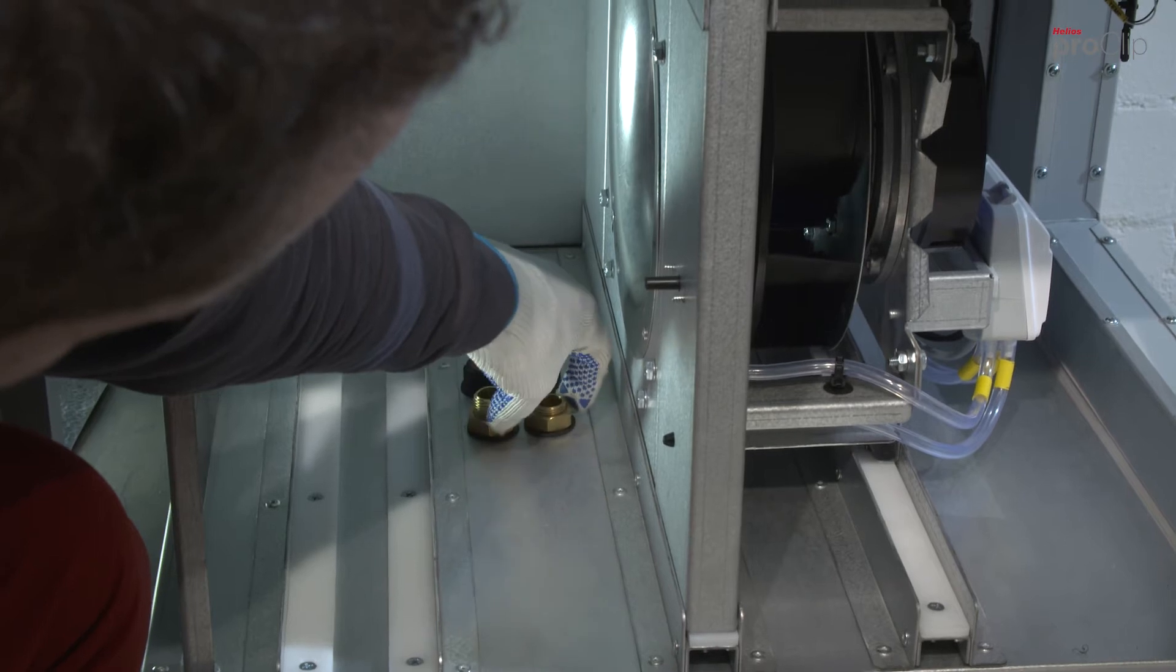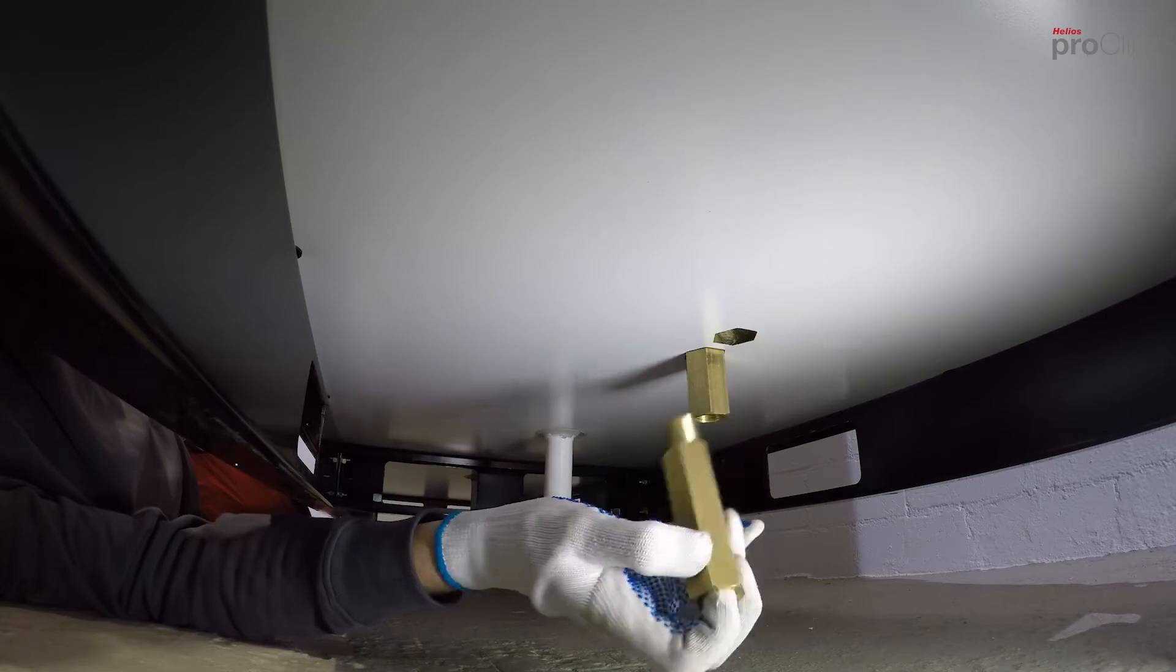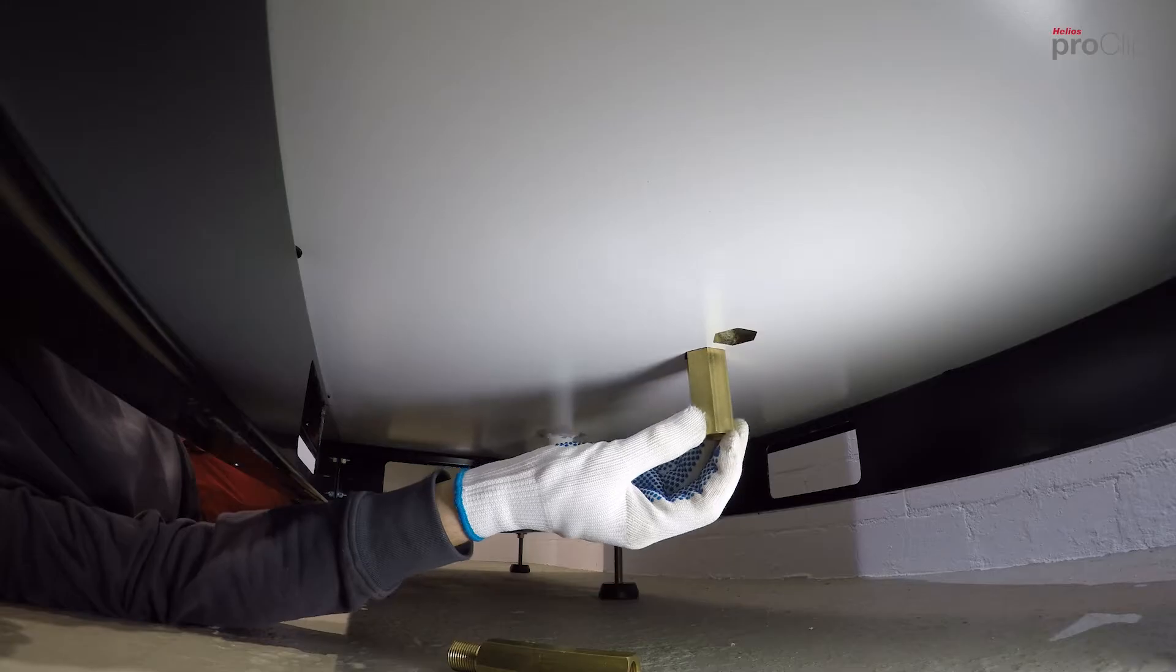Remove the connections for the flow and return of the heating lines and prepare the pipework for the heating lines. We recommend the use of elbow connections.